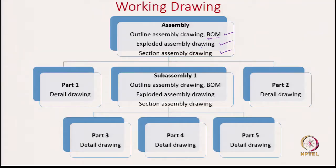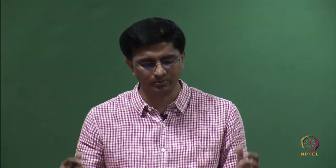We start with the assembly and show it in three different manners. You may choose one or all of them depending on the purpose. Essentially what we are saying is the assembly is composed of, say, part 1, part 2, and subassembly 1. If you bring all these together you get the main assembly, but the subassembly itself is an assembly again composed of multiple parts.